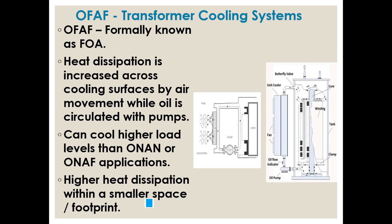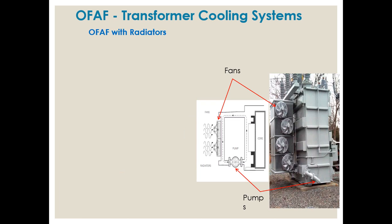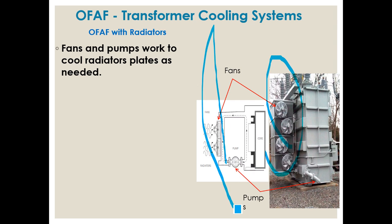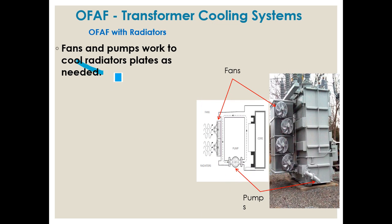Think about a 5 kVA ONAN transformer. If the transformer is having an oil force air force cooling system, then the size will be lesser than ONAN or ONAF because it has forced air and forced oil, so the cooling will be better. With radiators, the fan is mounted separately and the radiator may also be available. The fan and pump work to cool the radiator plates as needed.